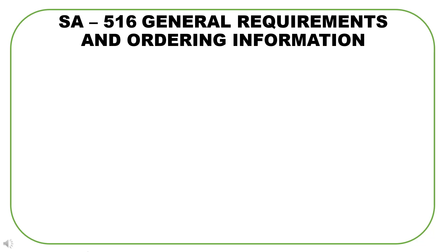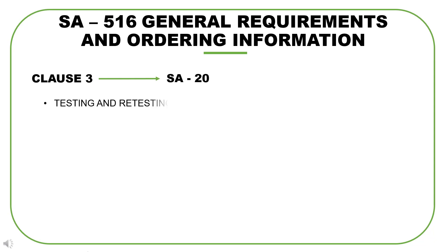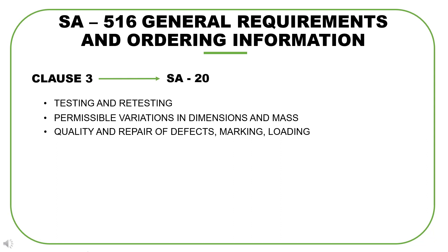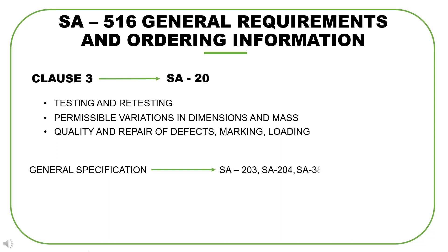Clause 3 gives the general requirements and ordering information. As per this clause, SA 516 needs to conform to the general specification SA 20 for these requirements. We need to refer to SA 20, which gives us procedures for testing and retesting, permissible variations in dimensions and mass, quality and repair of defects, marking, loading, etc. Once you start using Section 2 regularly, you'll notice that specifications often refer to some other general specification where general requirements are outlined. The general specification covers general requirements applicable to many specifications. For example, SA 20, apart from SA 516, also covers general requirements for SA 203, SA 204, SA 387, and many more.